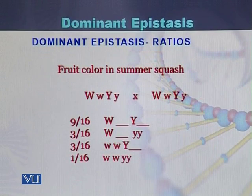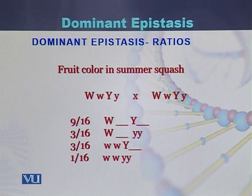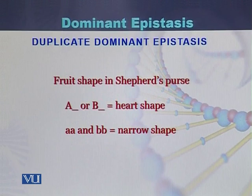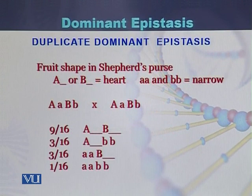In dominant epistasis we see ratios exactly like independent assortment — the law proposed by Gregor Mendel. The ratio follows independent assortment: 9, 3, 3, and 1. There is another example of duplicate dominant epistasis that can also be seen in the fruit shape in shepherd's purse, where the ratio is exactly 9, 3, 3, 1.